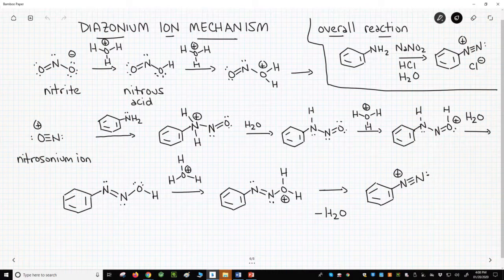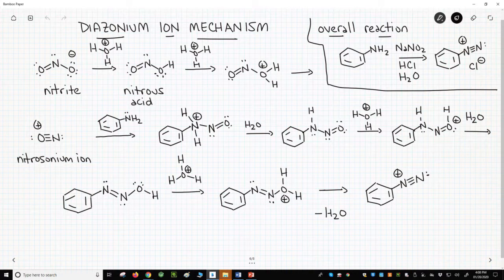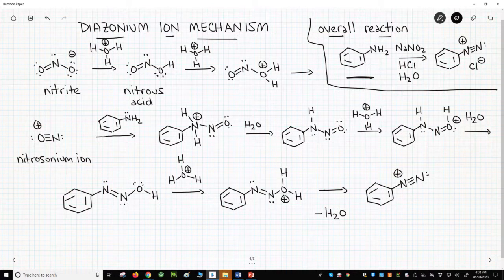In the far upper right corner, we have our overall transformation. An aniline reacts with sodium nitrite, NaNO2, and an acid like HCl in water to form a diazonium ion.